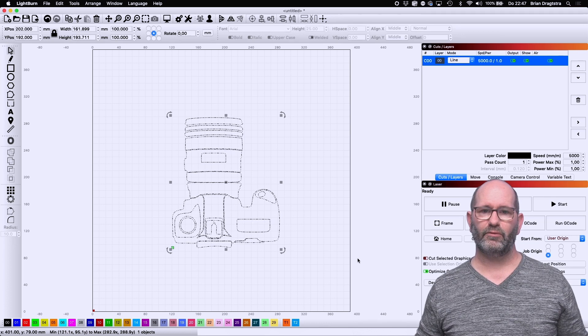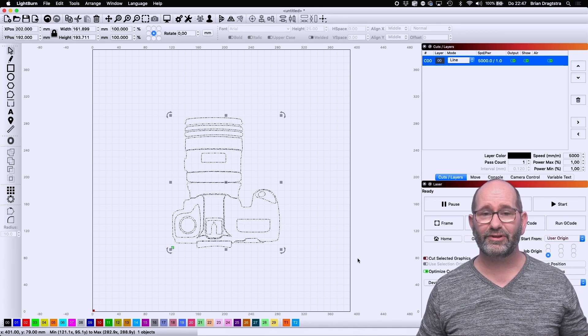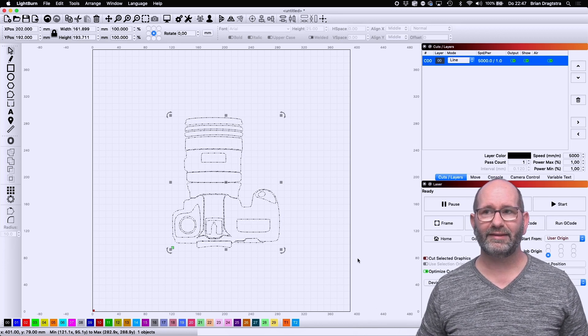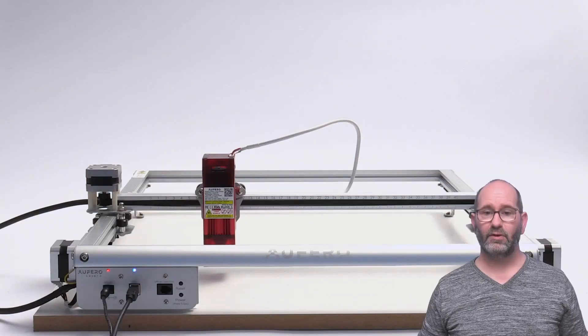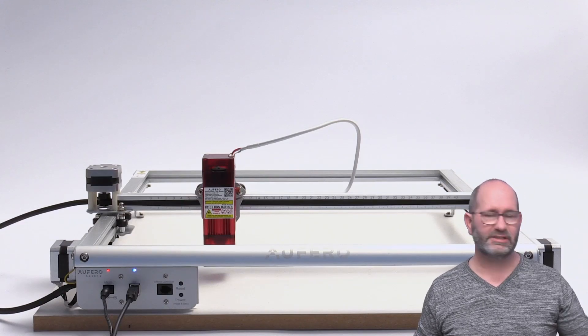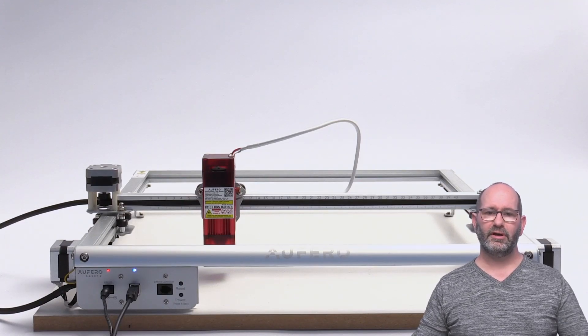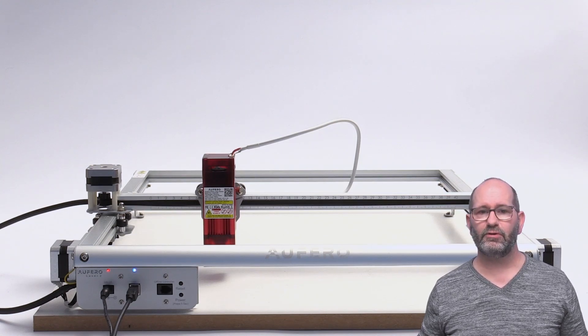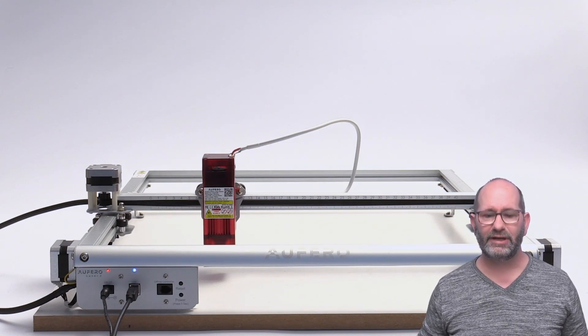Then someone at Aufero said, well, just what you have to do is screw your laser to a wooden board or something like that so that it's sturdy. And well, that's exactly what I did. You can see the laser here mounted on a wooden plate. And now the laser can't move at all. It's really, really sturdy.